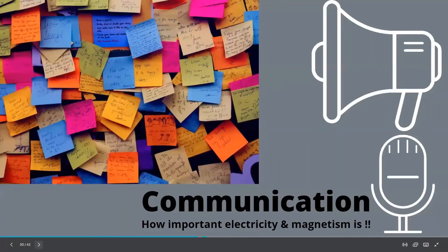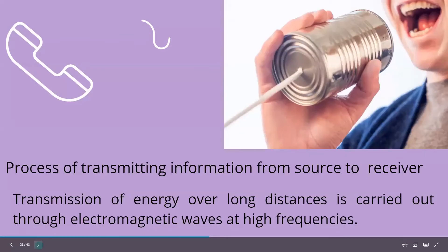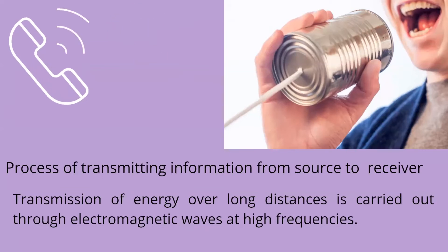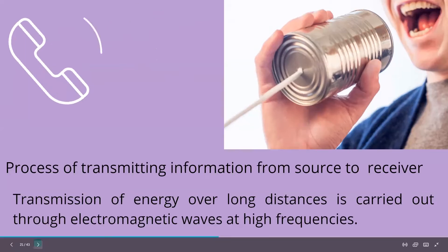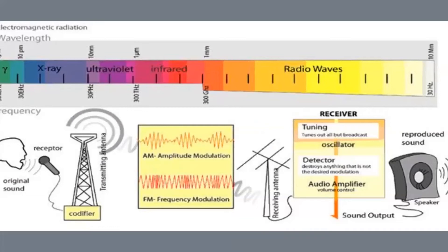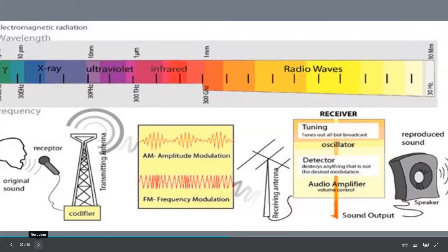The next important application is communication, where electricity and magnetism play a vital role. Communication is the process of transmitting information from sender to receiver. Transmission over long distances is mostly done through electromagnetic waves of high frequency. You can see a diagram showing original sound being transmitted using an antenna. Engineering students will study modulation — amplitude modulation, frequency modulation — and once transmitted, we receive the signal and somehow recover the original file. These are areas where the concept of electricity and magnetism is being used.